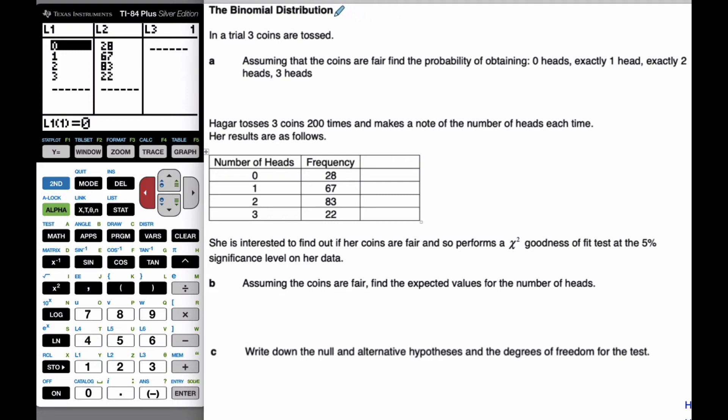Well, this problem here, we're going to have the binomial distribution and how it combines with a chi-squared goodness of fit test to see if a distribution or scenario we have actually fits a binomial scenario. So, imagine in a trial of three coins, the coins are tossed.